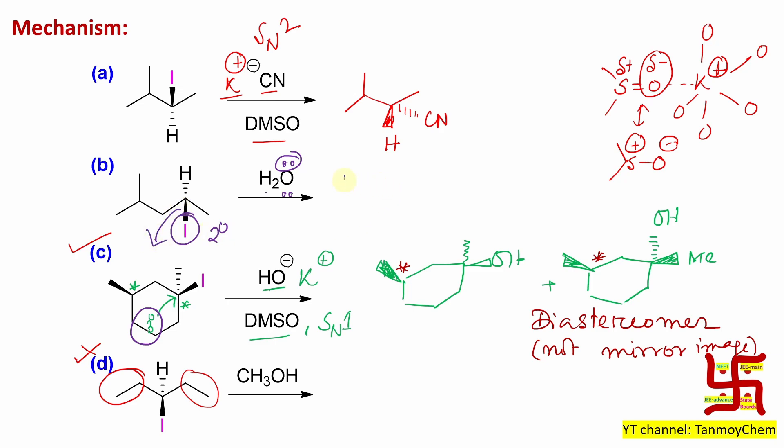Now if you look at iodide, it is also a good leaving group. So what can happen? It will leave and produce a carbocation. When carbocation is produced, this asymmetry will be lost because carbocation is SP2 hybridized, it is planar and it has a vacant P orbital. The P orbital has both lobes.